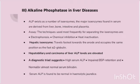The hepatic isoenzyme travels fastest towards the anode and occupies the same position as the fast alpha-2 globulin in electrophoresis. In hepatobiliary carcinoma and carcinoma of the liver, ALP levels are elevated. A diagnostic triad suggests high serum alkaline phosphatase, impaired bromsulfophthalein retention, and normal or almost normal serum bilirubin. Serum alkaline phosphatase is found to be normal in hemolytic jaundice.